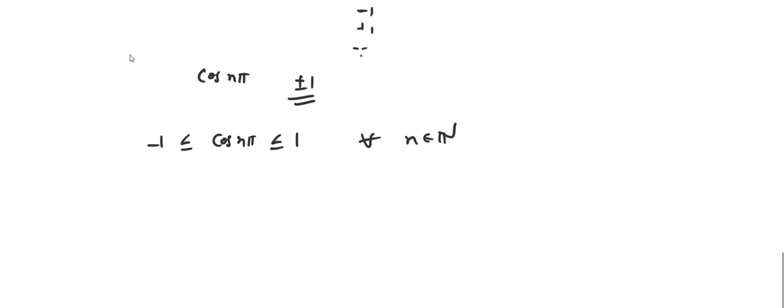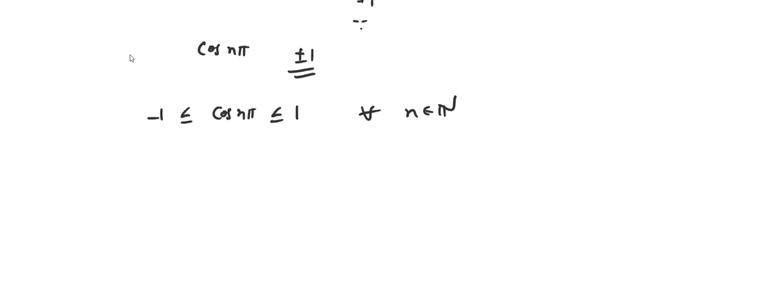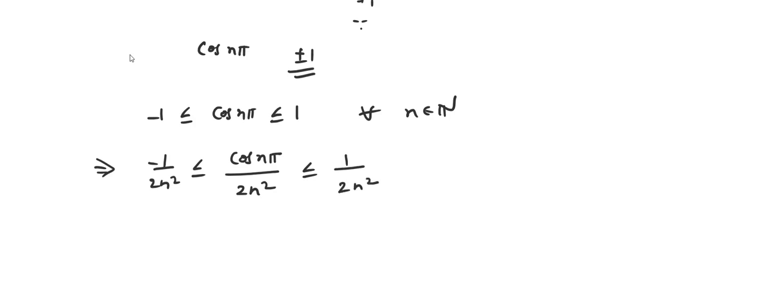Now we move toward the Sandwich Theorem. Let's divide this inequality by 2n². What we obtain is: −1/(2n²) ≤ cos(nπ)/(2n²) ≤ 1/(2n²).